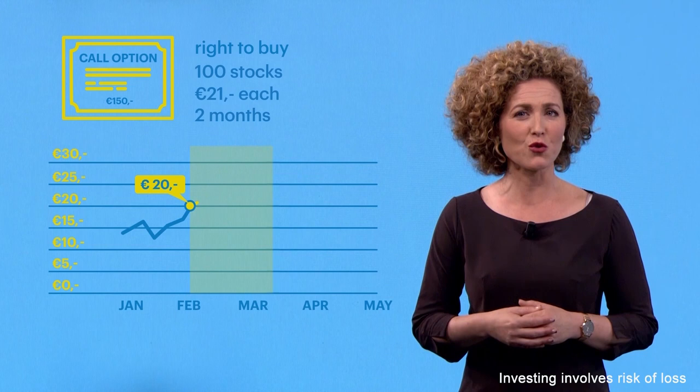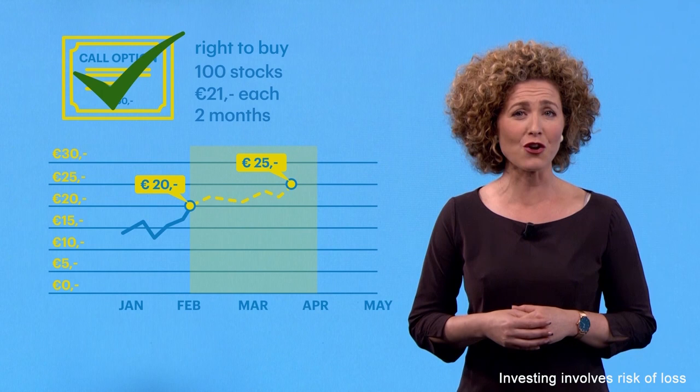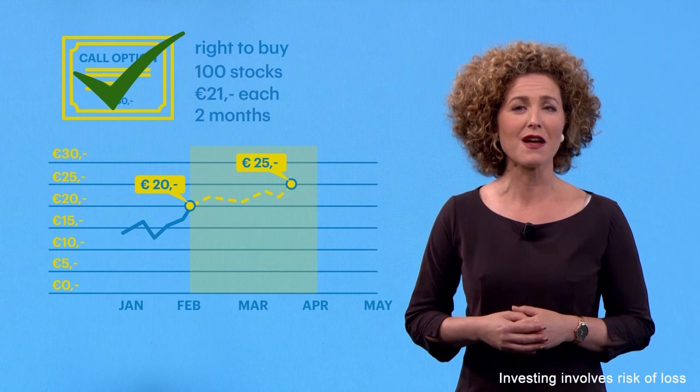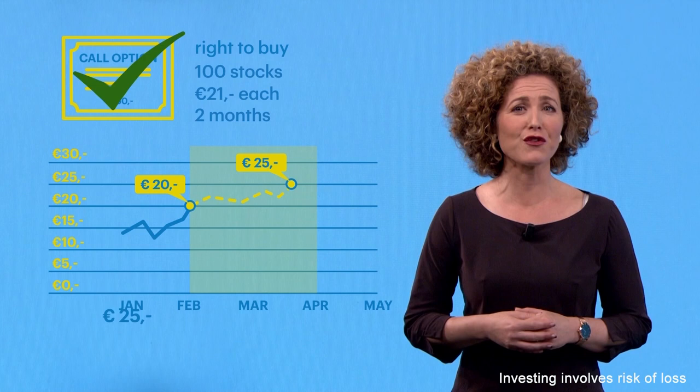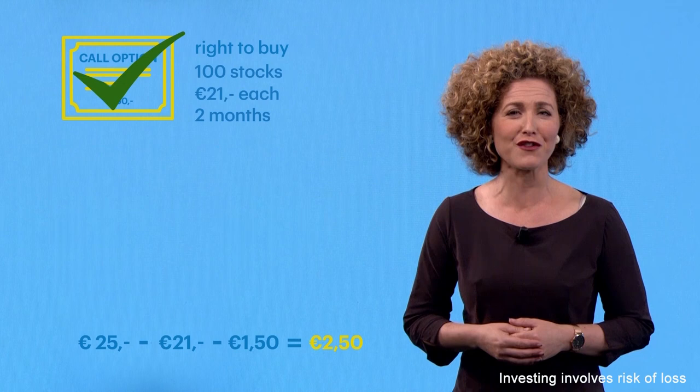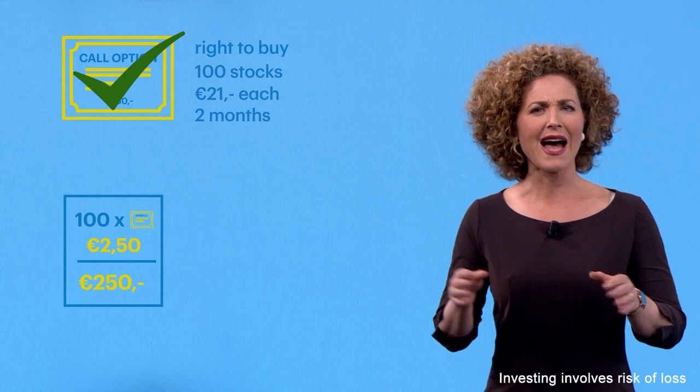If the price of the stock rises to 25 euros at the end of the two months, you can exercise the option and open a position for 100 stocks at a price of 21 euros per stock. As the market rate is higher, you could directly obtain a profit by selling the stocks. Per share, you would then receive 25 euros from the sale. Taking the 21 euro purchase price and 1 euro 50 premium into account, the profit comes down to 2 euro 50 per stock.